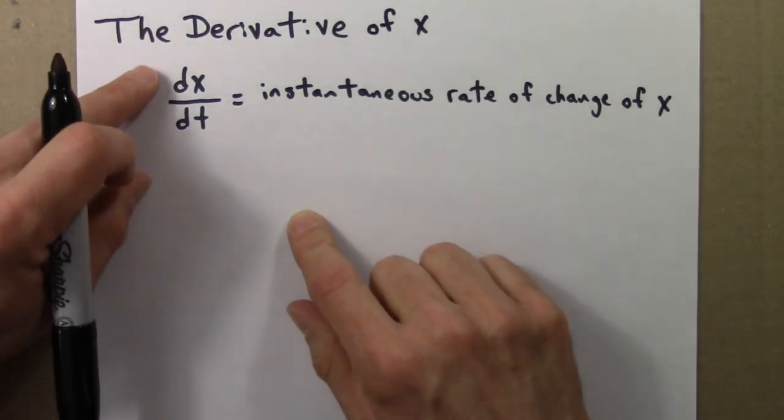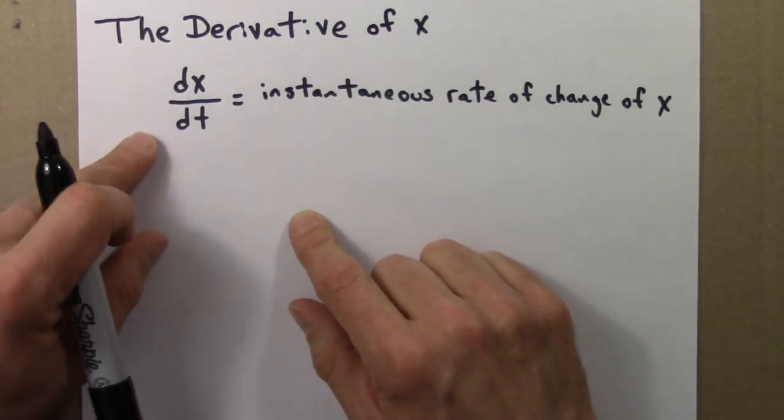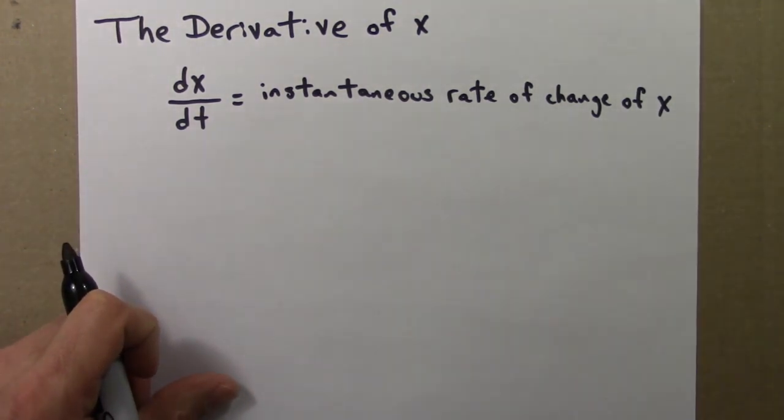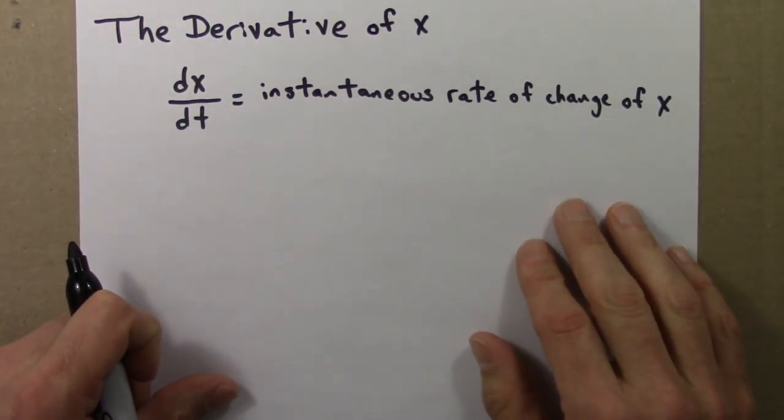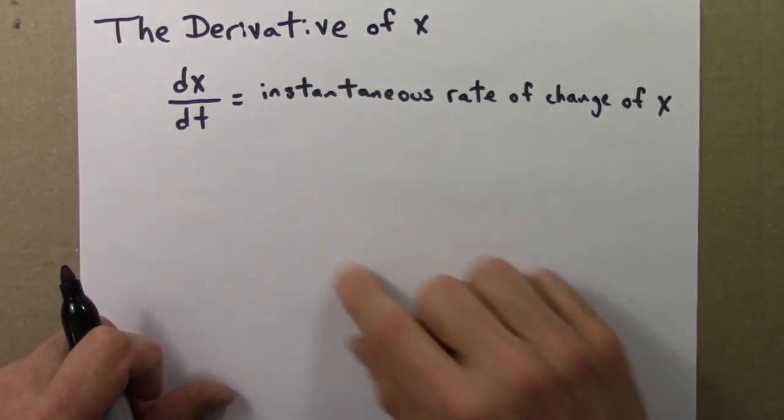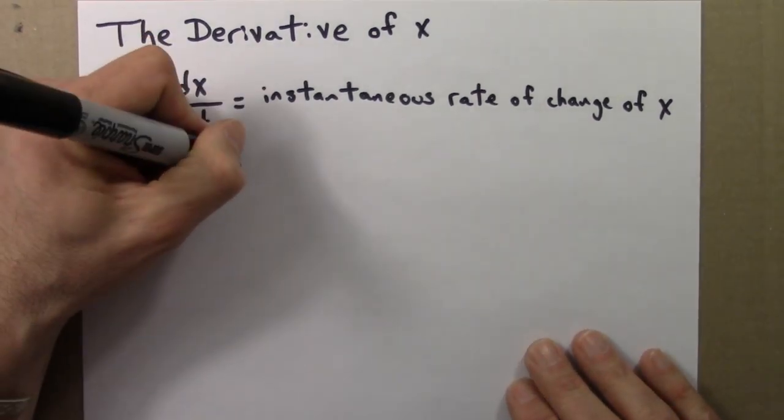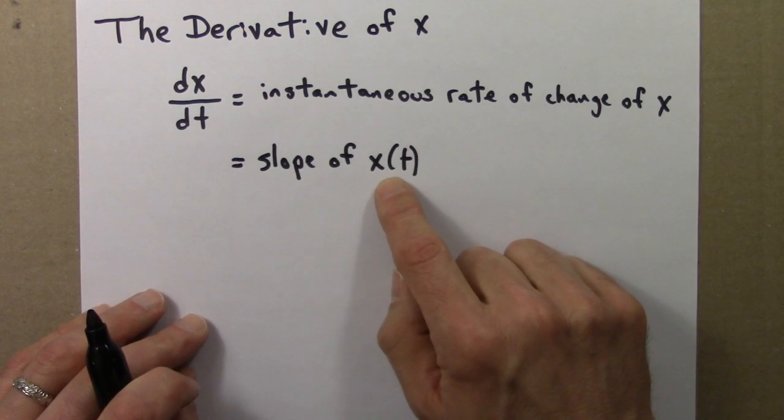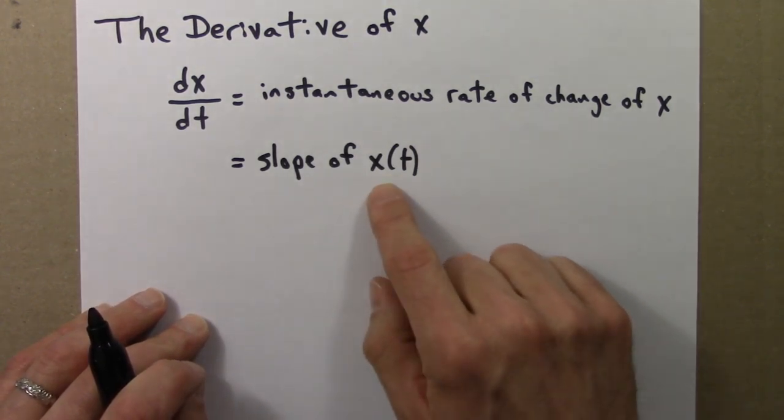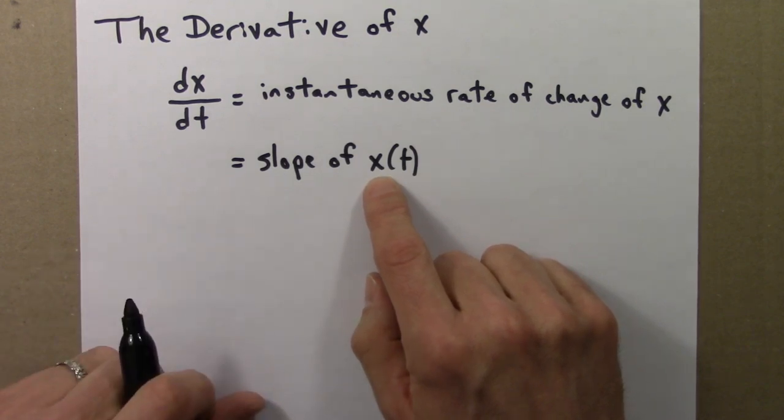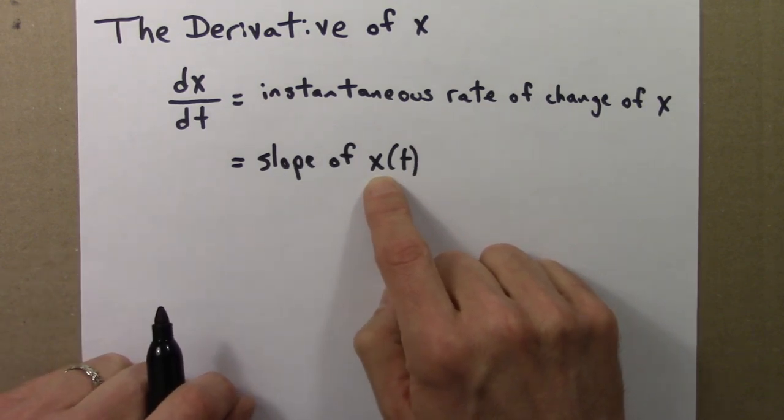So the derivative of x, dx dt, is the instantaneous rate of change of x. That's the key thing you need to know from this subunit. The derivative is the instantaneous rate of change. It's also the slope of x. x could be a curve, but that's okay. We saw in the previous video how to think about slopes of curves.